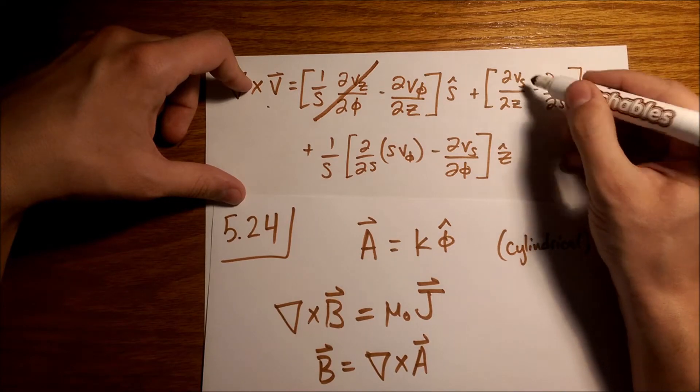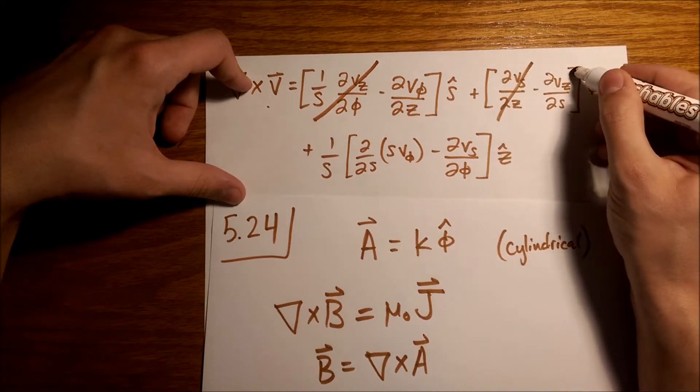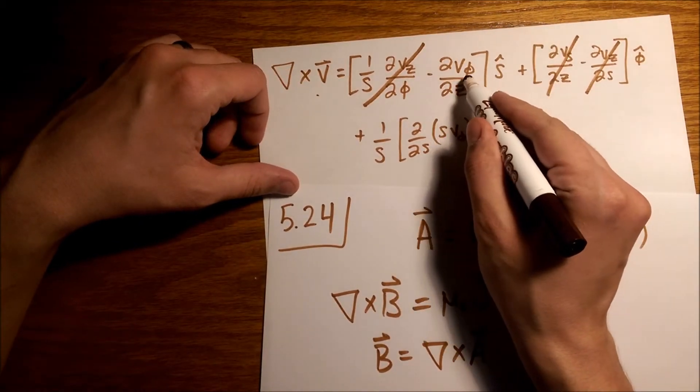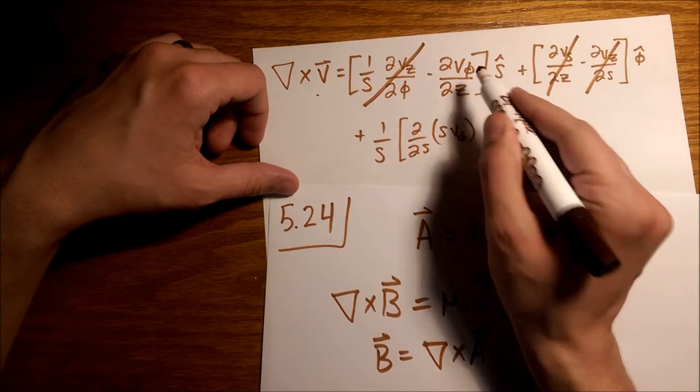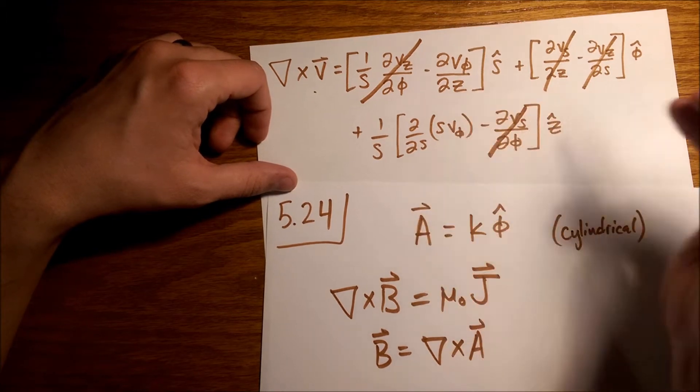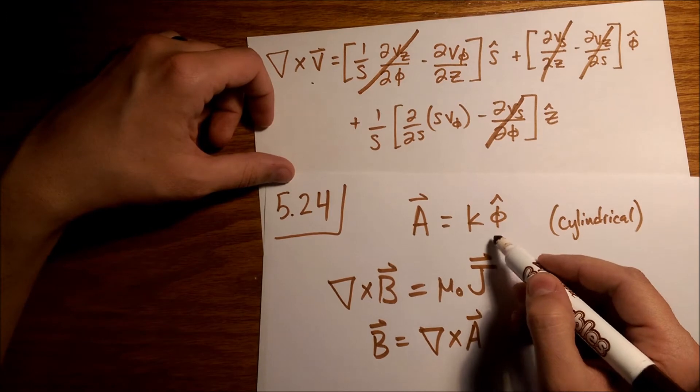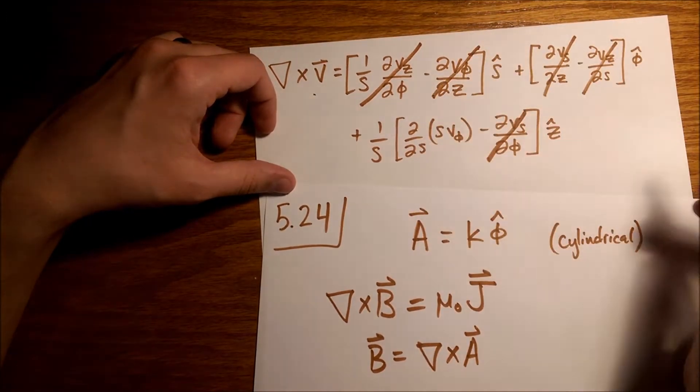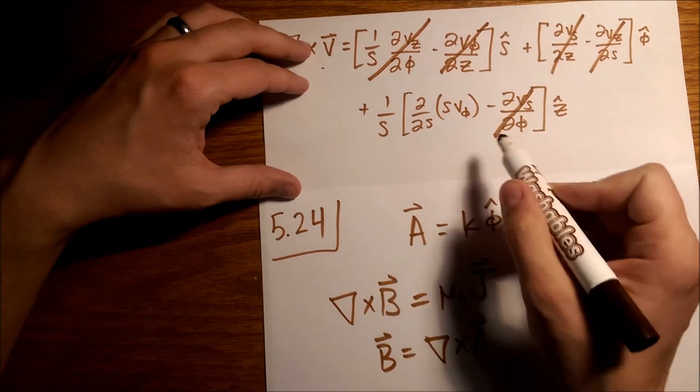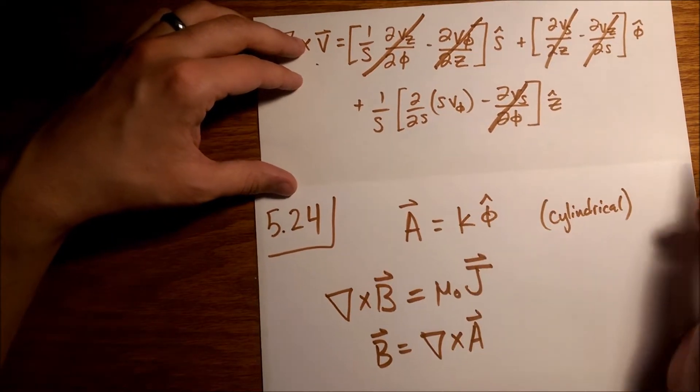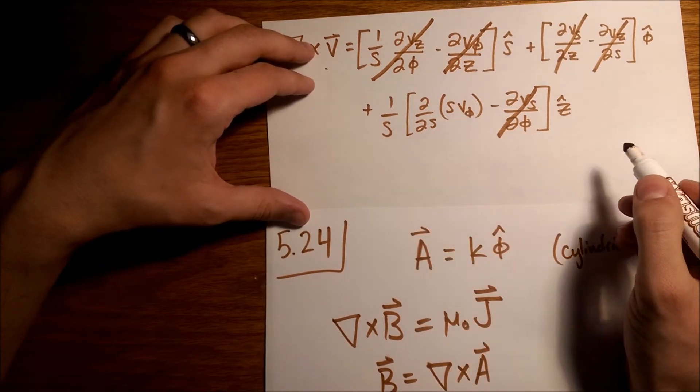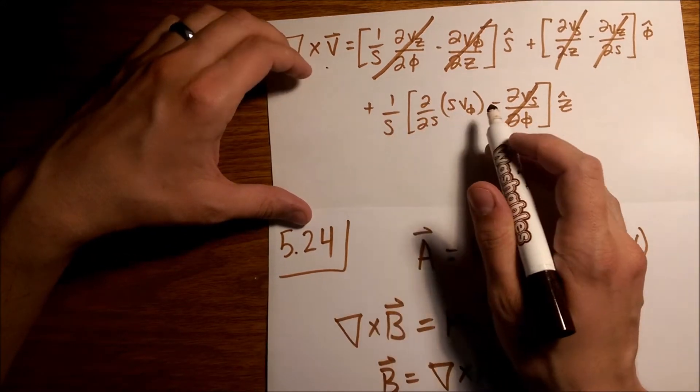This vs is also 0, that goes away. And vz, right? Vs. So the only terms we're left with are this v phi here, partial v phi with respect to z. And we notice there is no z dependence here, so this also goes away. And we're left with this v phi. Now there is no s dependence in this, but because we have this multiplied by s here, we still, we don't end up with 0 right here.